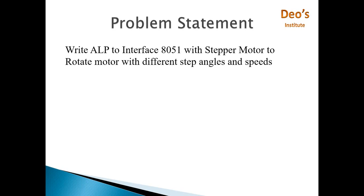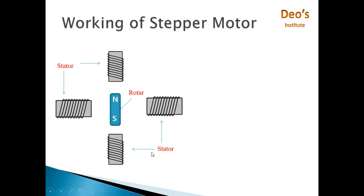Before going towards the actual program, first we will see what is a stepper motor, what it consists of, how it rotates, and how to find out its step angles. This is a basic diagram of a stepper motor which consists of a rotor at the center surrounded by the stator. Here we have used the four-stator design diagram. The stator is basically an electromagnet — a magnet which has a coil. When current is applied through this coil, only then the magnetic field of the magnet will be active.